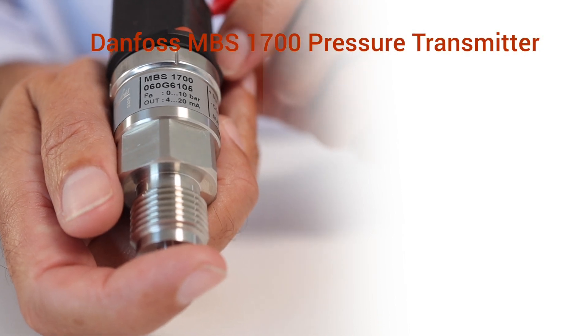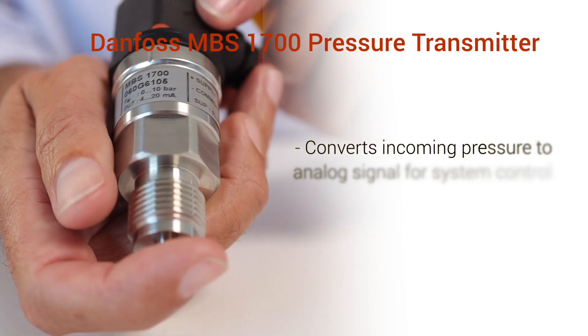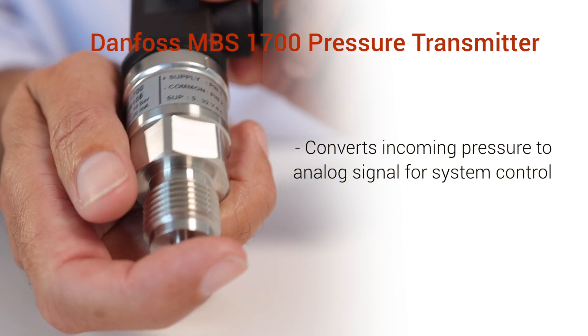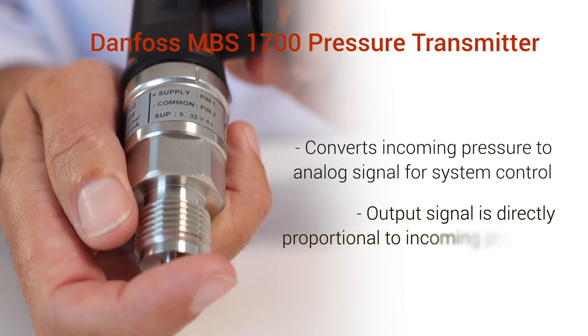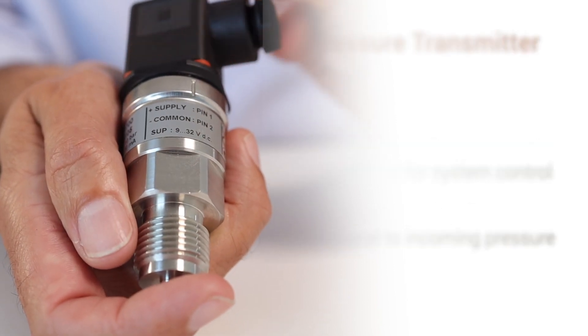A pressure transmitter measures an incoming pressure and converts it to an analog signal for system control. The output signal is directly proportional with the applied pressure.